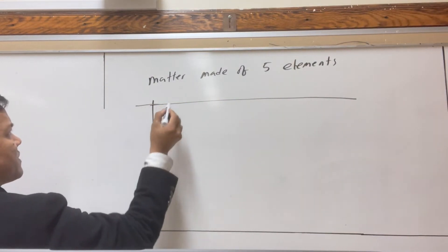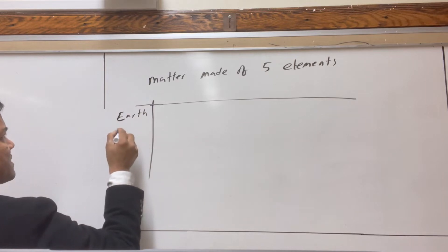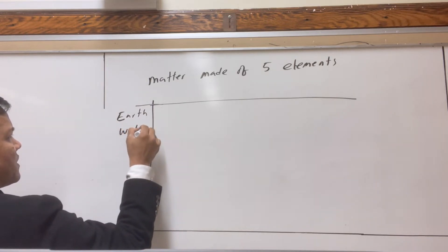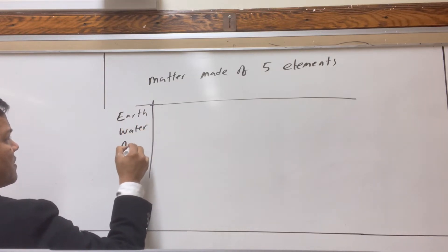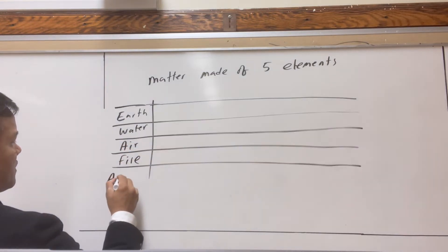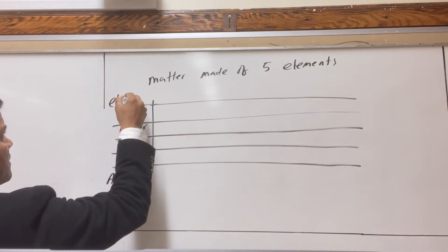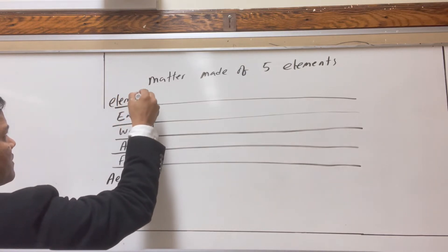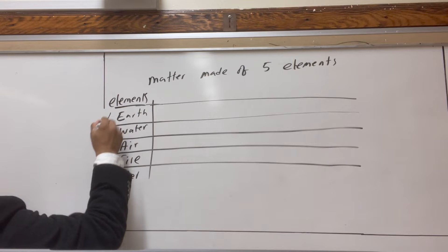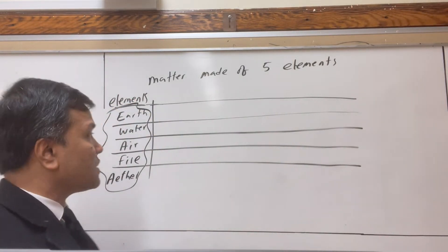So number one, he called it earth; number two, water; air; fire; and ether. So these are the elements — matter is made of these five elements, according to Aristotle.